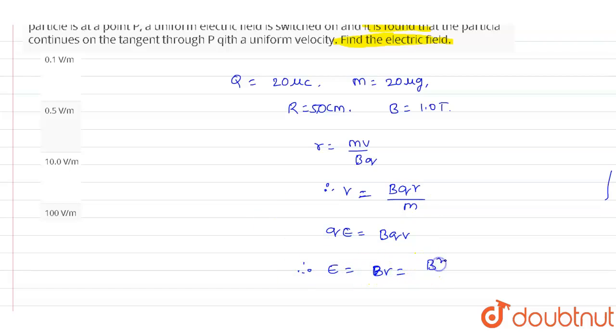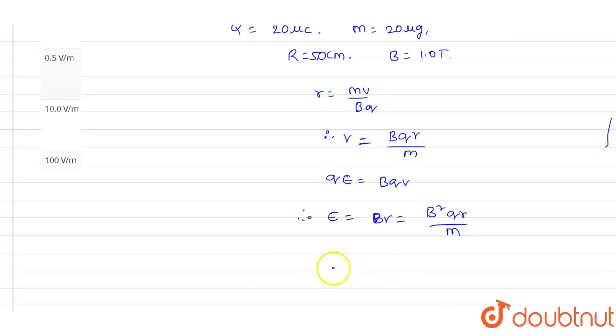Which will be equals to B squared into qR divided by m. So we will write the capital E value. As we all know the parameters which are given in the question itself, we just need to substitute those values here.